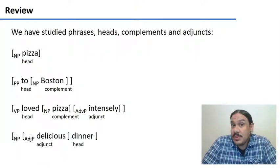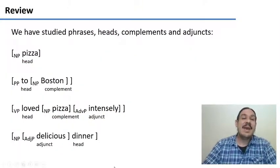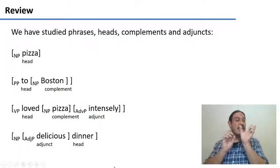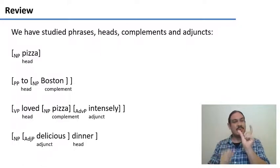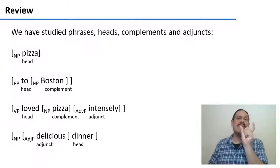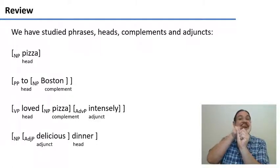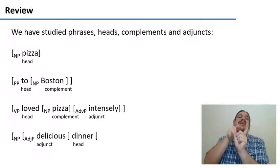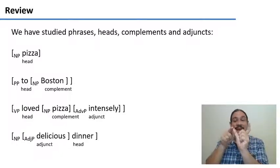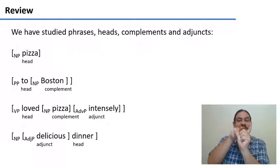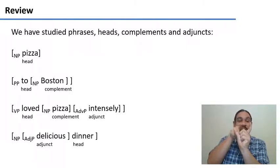Let's review a little bit of what we have studied. For each sentence, we have phrases. For example, the noun phrase 'pizza.' This is a noun phrase because its main word, or its head, is a noun — the noun 'pizza,' which is a word for a thing. So each phrase has a head, and the type of head determines the type of phrase. The head of the phrase 'pizza' is a noun, so this would be a noun phrase.